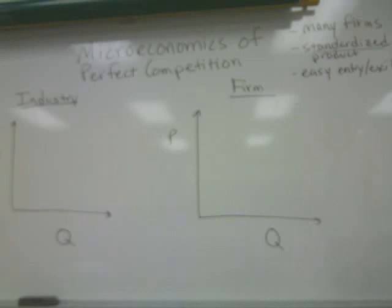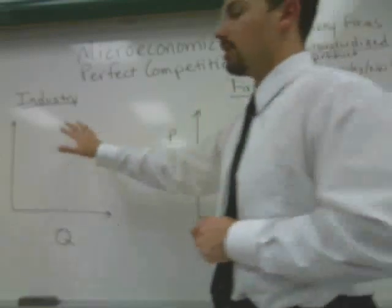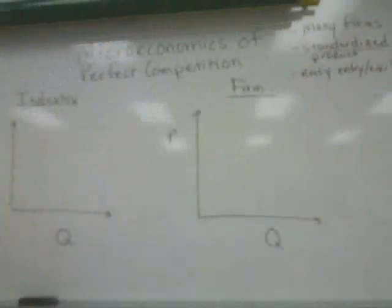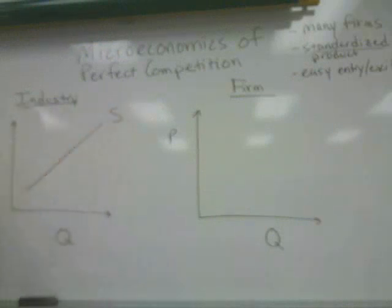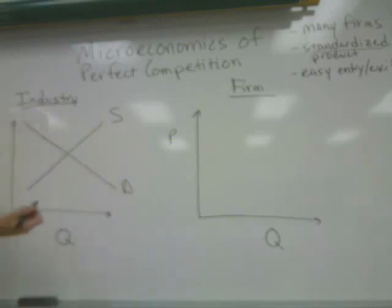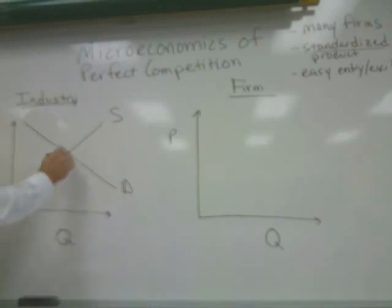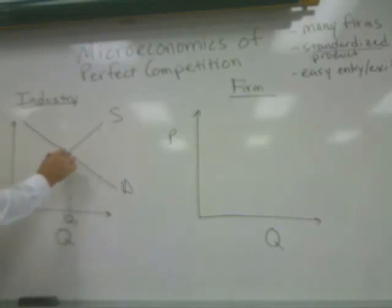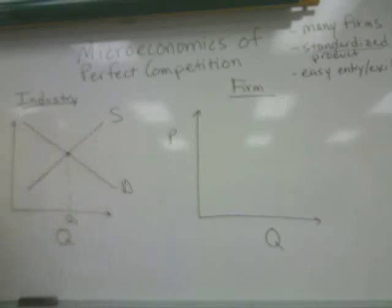In terms of understanding profit maximization in the perfectly competitive industry, we need to start with the picture showing the curves for the industry. The industry, like any other, has a positively sloped supply curve and a negatively sloped demand curve. Where demand meets supply, the market is said to be at equilibrium — the quantity demanded equals the quantity supplied, so there is neither a surplus nor a shortage.